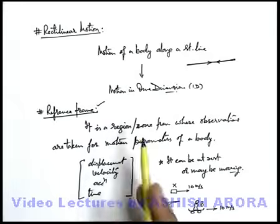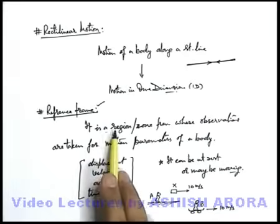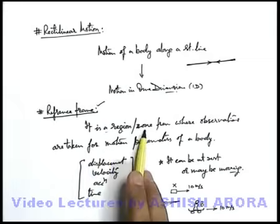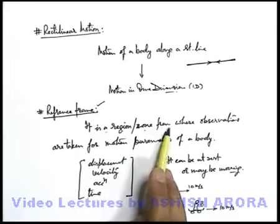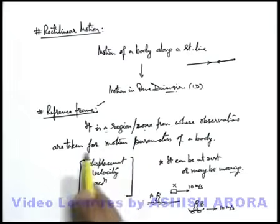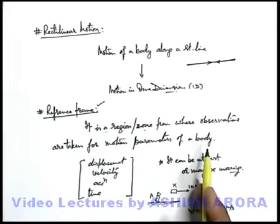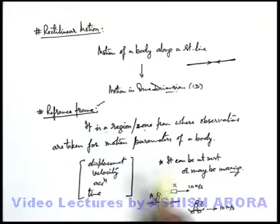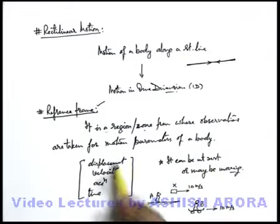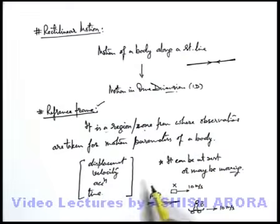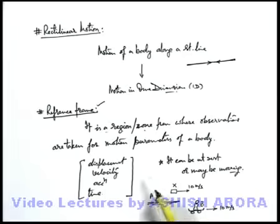So a reference frame can simply be defined as a region or zone from where observations are taken for motion parameters of a body. Either of these parameters can be recorded when a moving body is observed from a given reference frame.